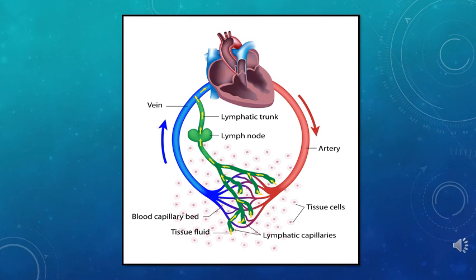On the way, the lymph passes through the lymph nodes which serve as filters, cleansing the fluid before it reaches the bloodstream. Lymph nodes are small, bean-shaped structures present throughout the lymphatic network.